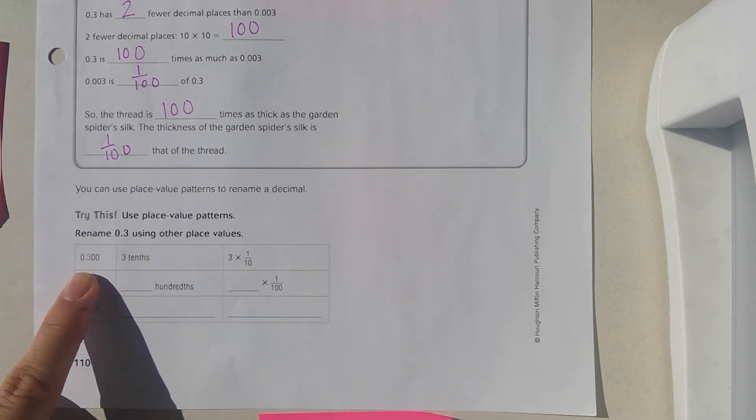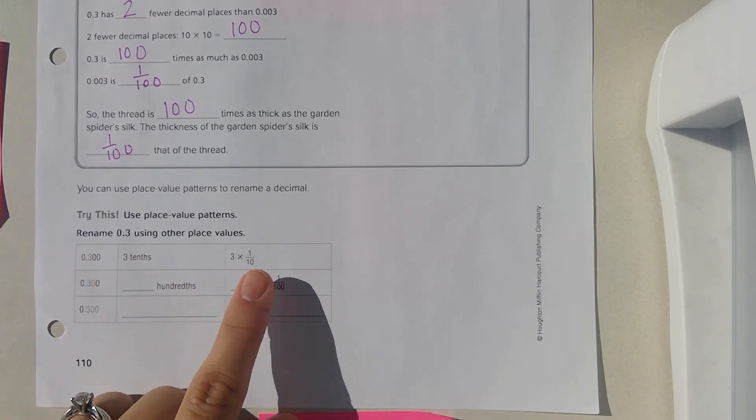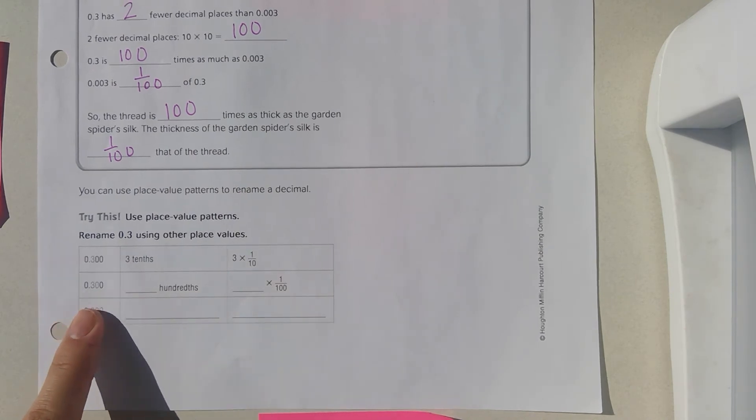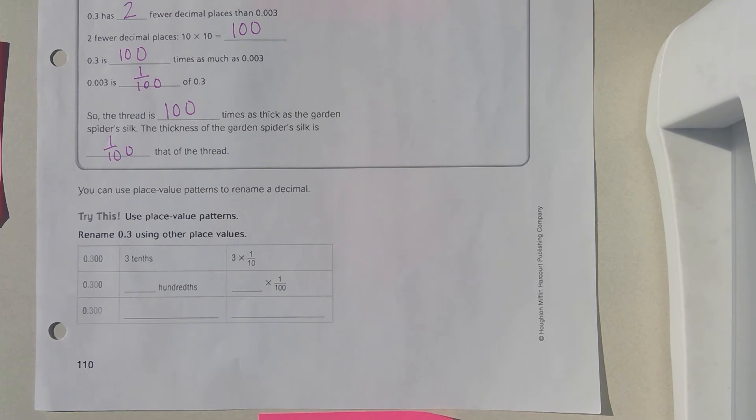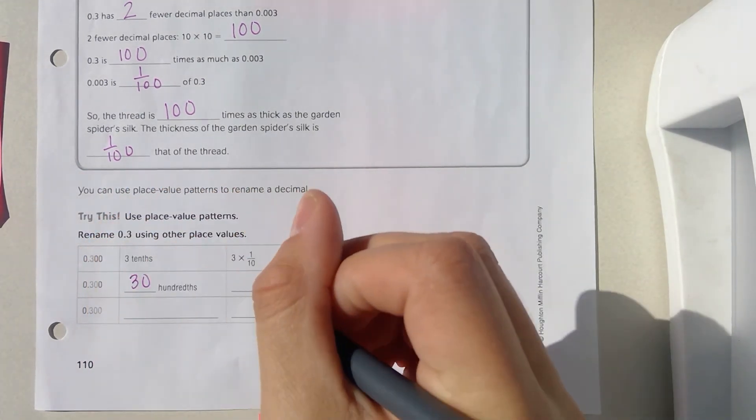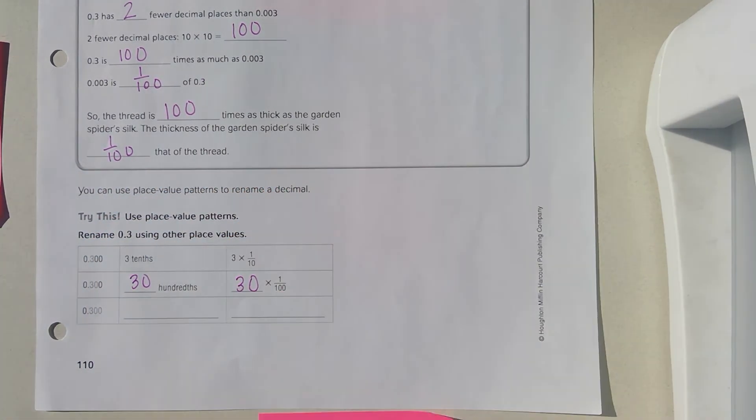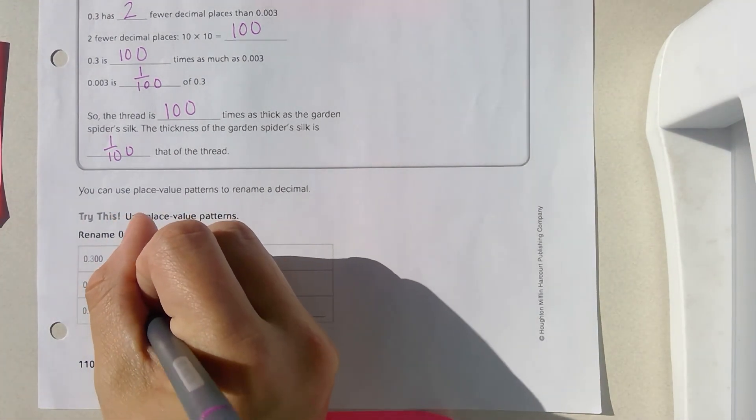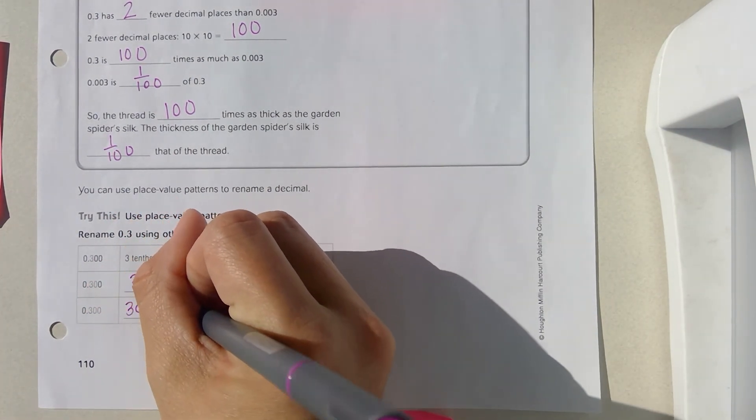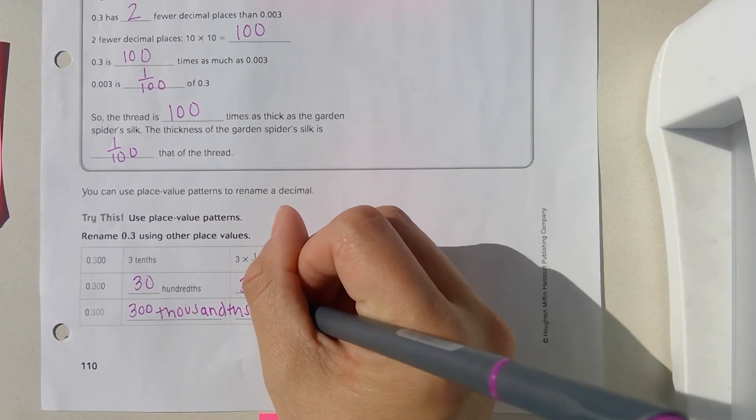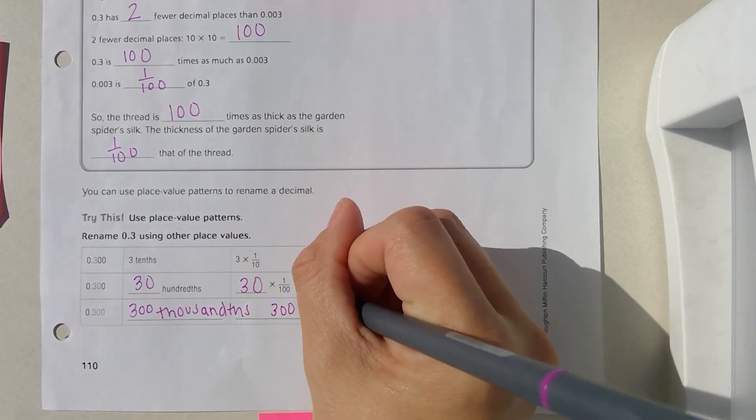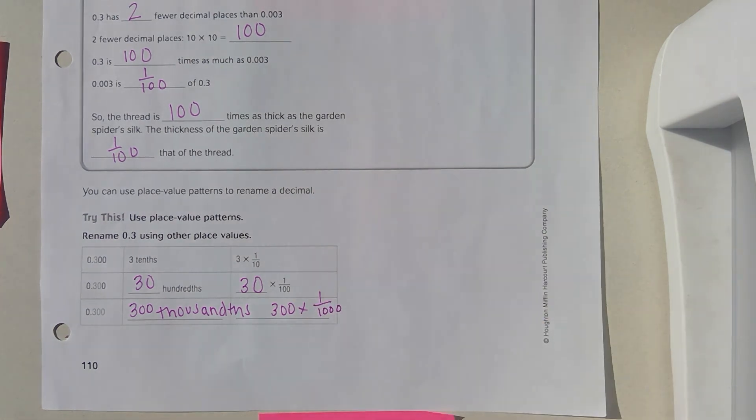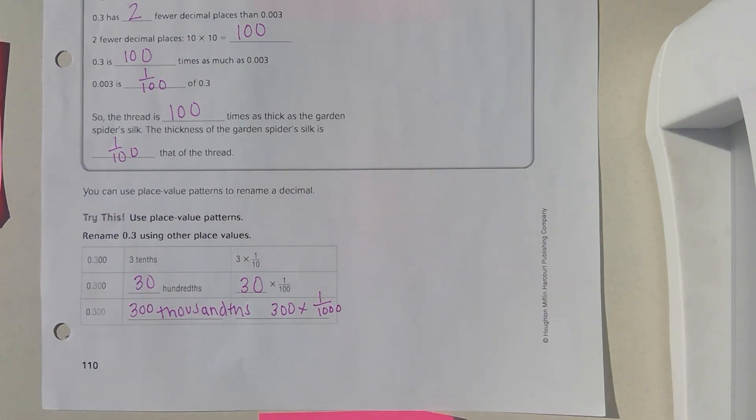Three tenths is three times one tenth. Thirty hundredths would be thirty times one hundredth. Three hundred thousandths would be three hundred times one thousandth.